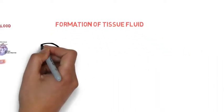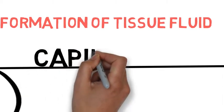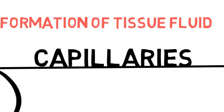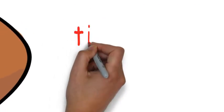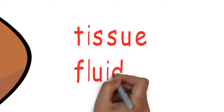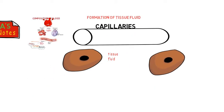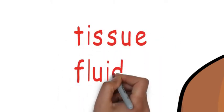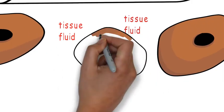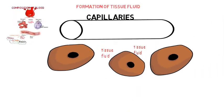Let's look at the formation of tissue fluid. This is the capillary where exchange of substances occur. Around the capillary are cells and between these cells are tissue fluid that is part of the nutrients provided to the cells.